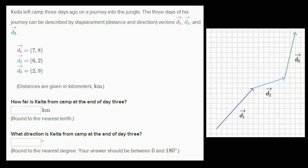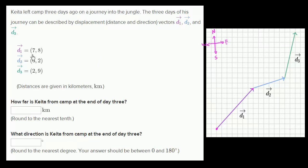Let's think about what's happening. On day one, let's say this is his starting point. Let me draw a compass here: north, east, west, and south. You can break his displacement down by how much he went in the east direction and how much he went in the north direction. He went seven kilometers in the east direction and eight kilometers in the north direction.